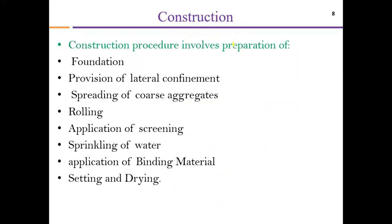The construction procedure of a water-bound macadam road begins with preparing the foundation. The foundation may be natural ground, subgrade, subbase, or base — anything beneath the water-bound macadam stratum must be completed properly. Next, lateral confinement in the form of shoulders or retaining walls should be constructed prior to laying coarse aggregate, so the aggregate will be properly confined during rolling and will not spread away from the carriageway.